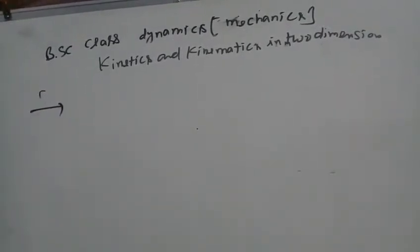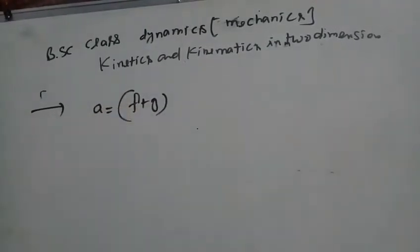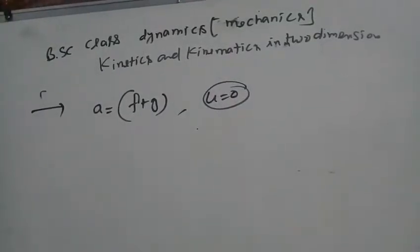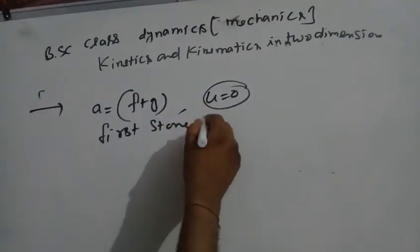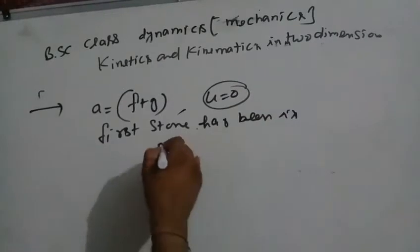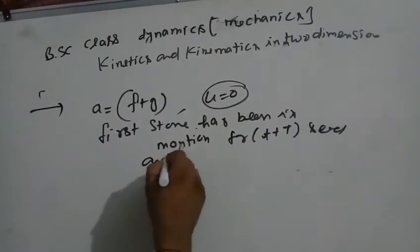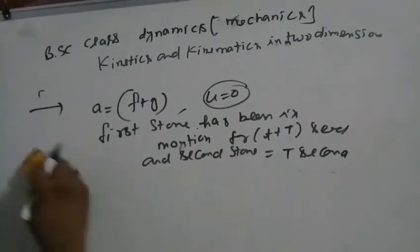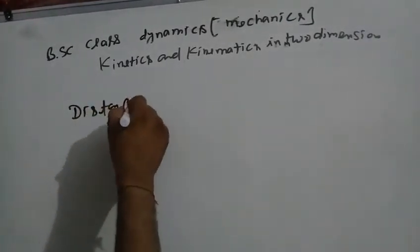Solution: The acceleration of the first stone released, relative to the aeroplane, is (f + g). The initial velocity of the first stone relative to the aeroplane is zero. The first stone has been in motion for time (t + T) seconds, and the second stone's time is T seconds.